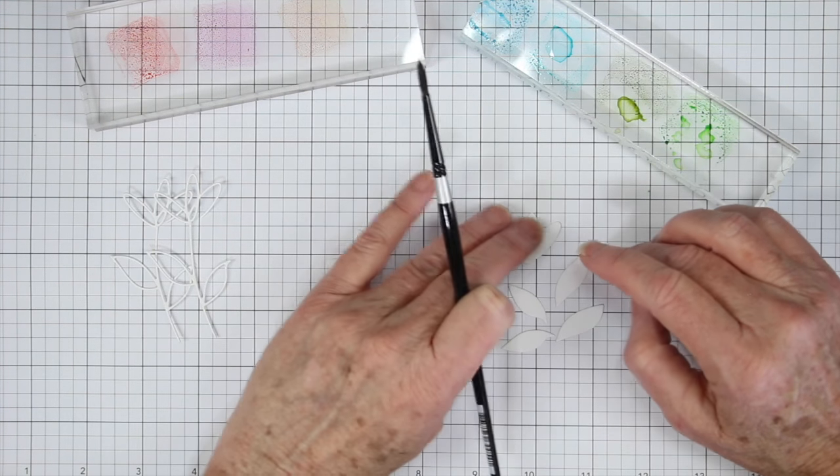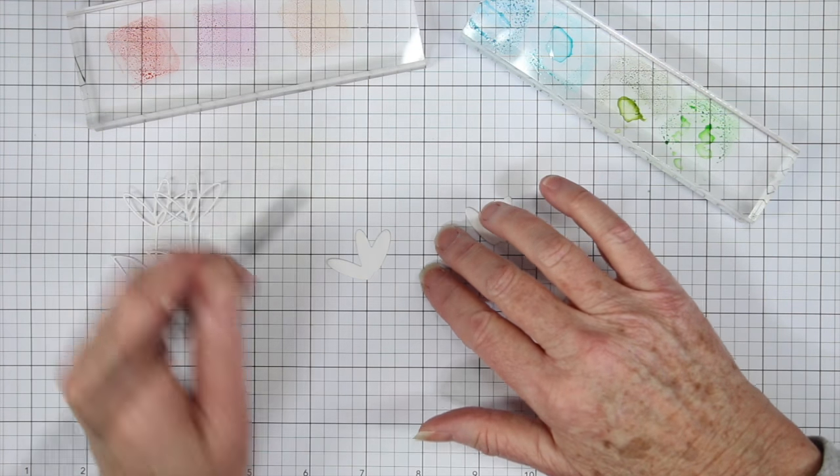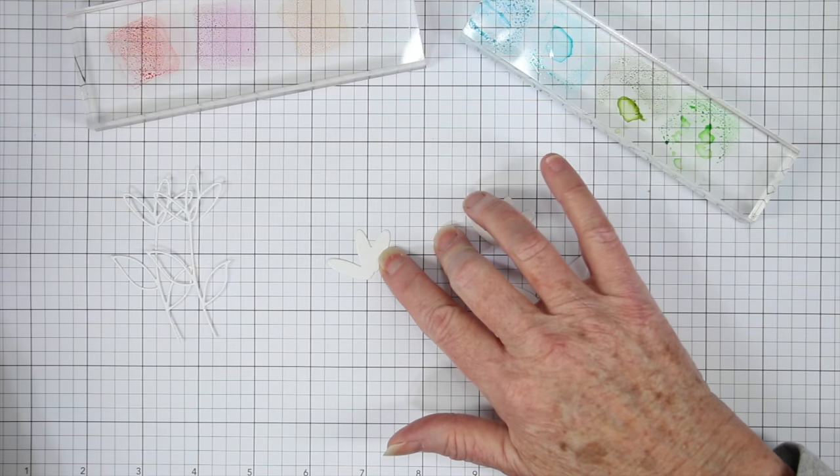To get started on this flower, I want to dip my paintbrush into the water, and before adding paint to the flower, I want to add some water to the blossom instead of spraying it like the background.